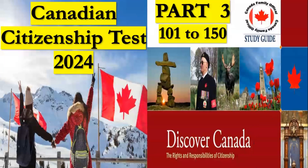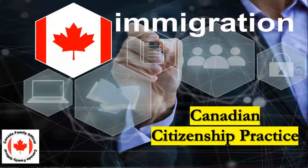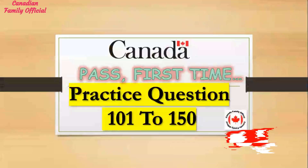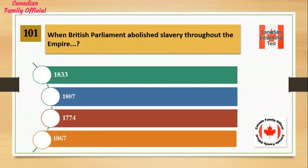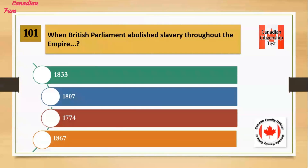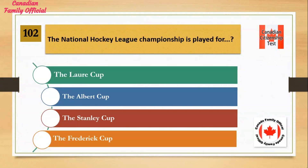Canadian Citizenship Test Part 3, Practice Questions 101–150. When did British Parliament abolish slavery throughout the Empire? Number 1: 1833. Number 2: 1807. Number 3: 1774. Number 4: 1867. And the answer is 1833.